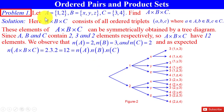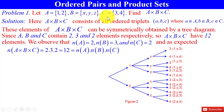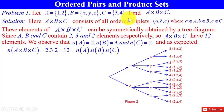Problem 1: Let A = {1, 2}, B = {x, y, z}, and C = {3, 4}. Here the number of elements in A is 2, the number of elements in B is 3, and the number of elements in C is 2. Find A×B×C, that is, find the Cartesian product of A, B, and C.